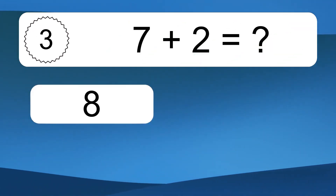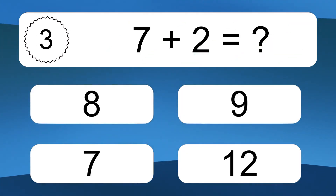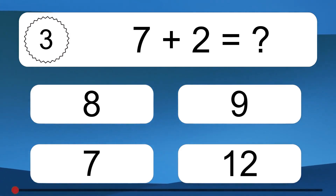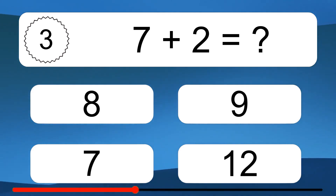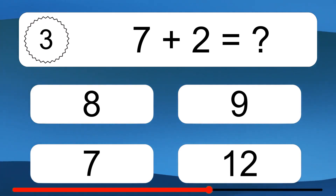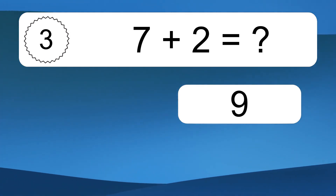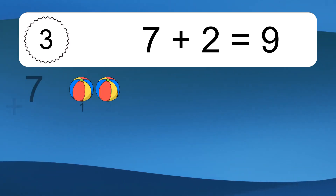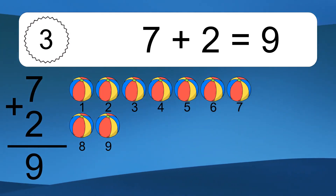7 plus 2 equals what? 7 plus 2 equals 9.